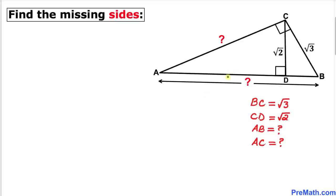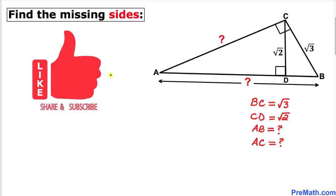Welcome to pre-math. In this video tutorial we have got this right triangle ABC as you can see in this figure, such that side length BC is square root of 3 and height CD is square root of 2, and now we are going to calculate the missing sides AB and AC. Please don't forget to give a thumbs up to this video.